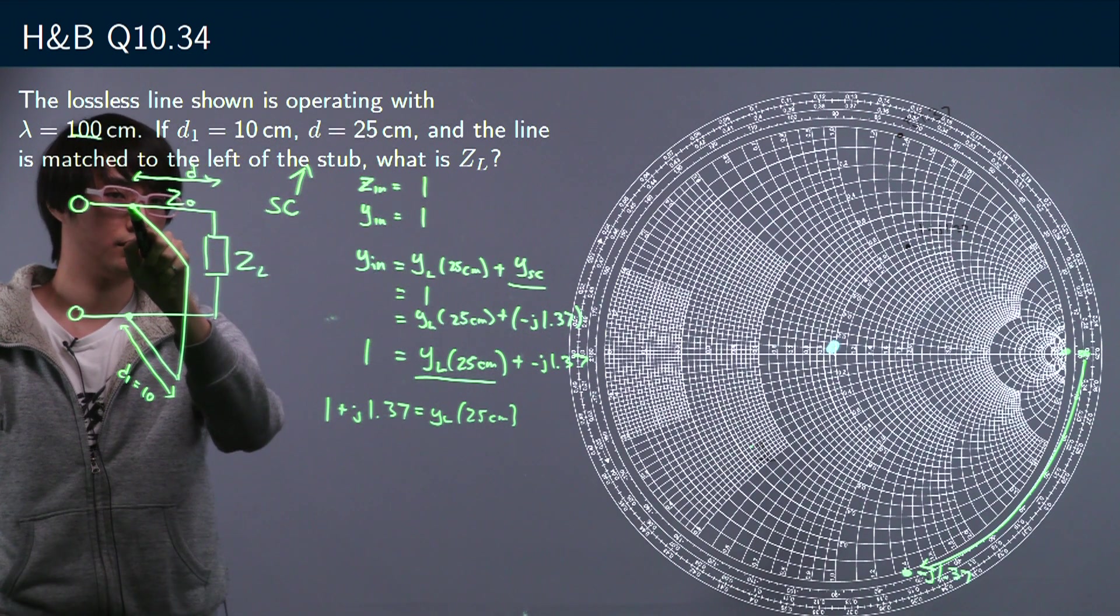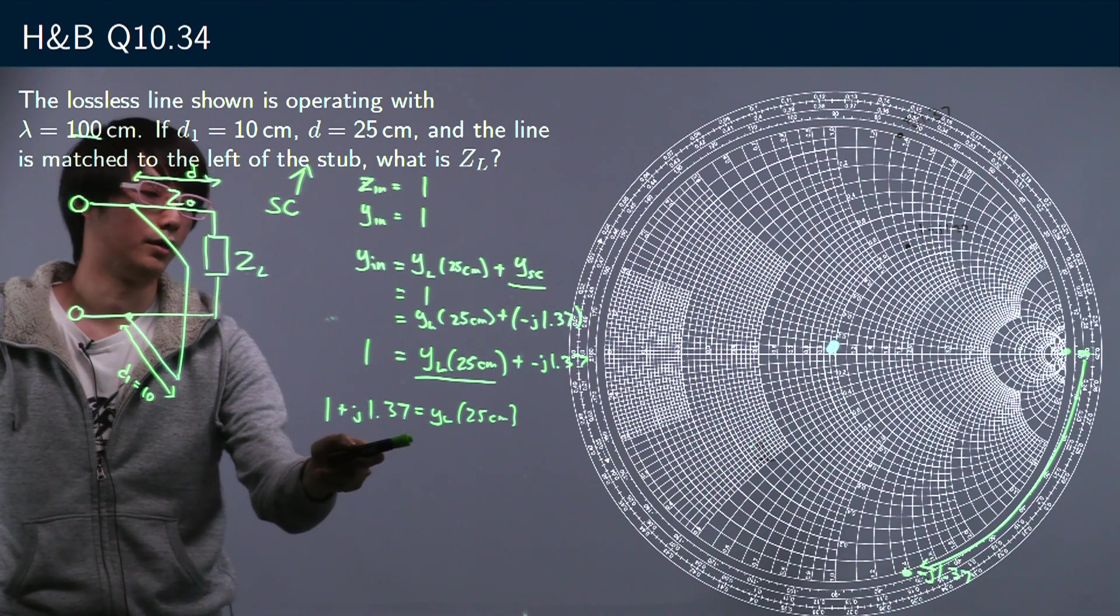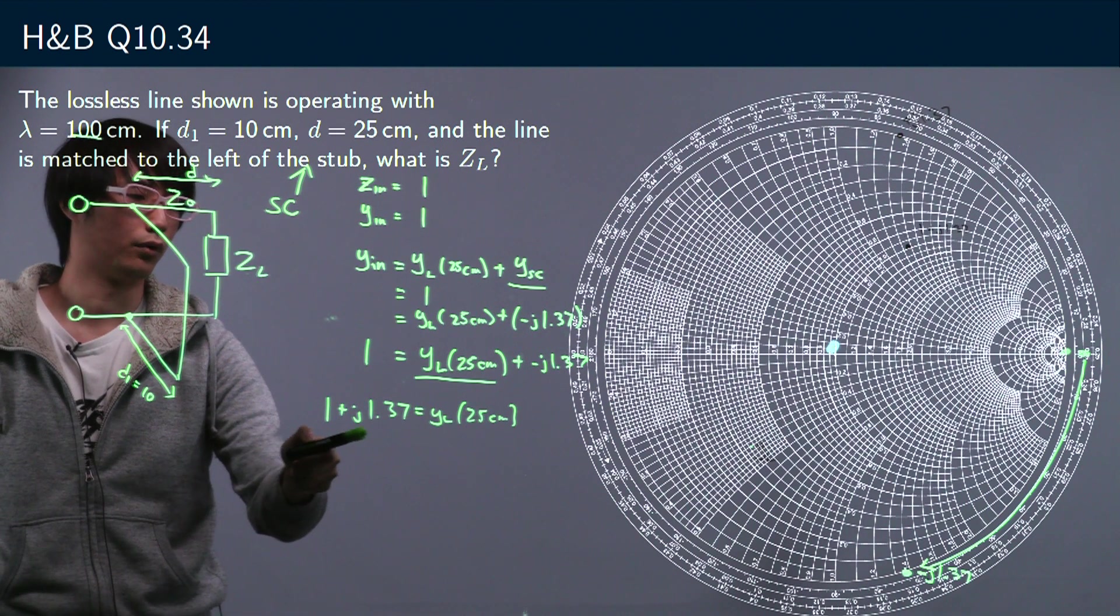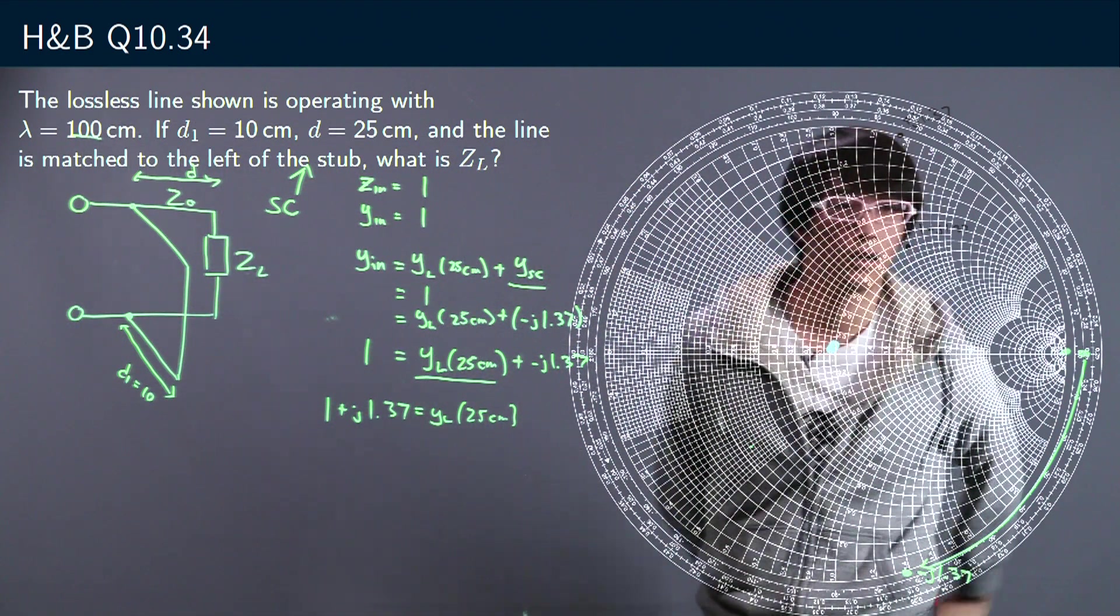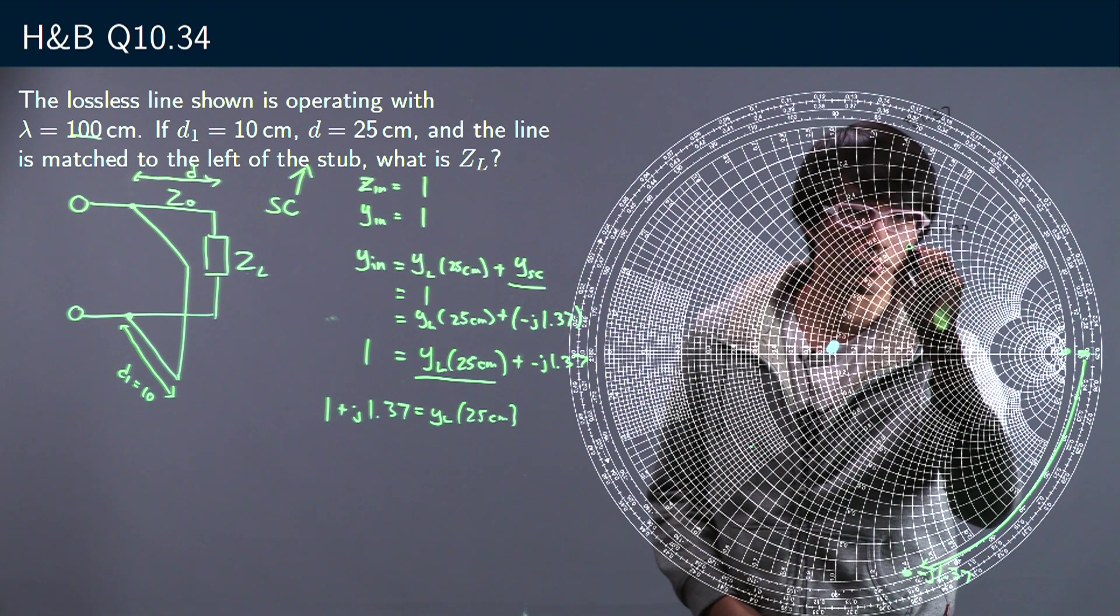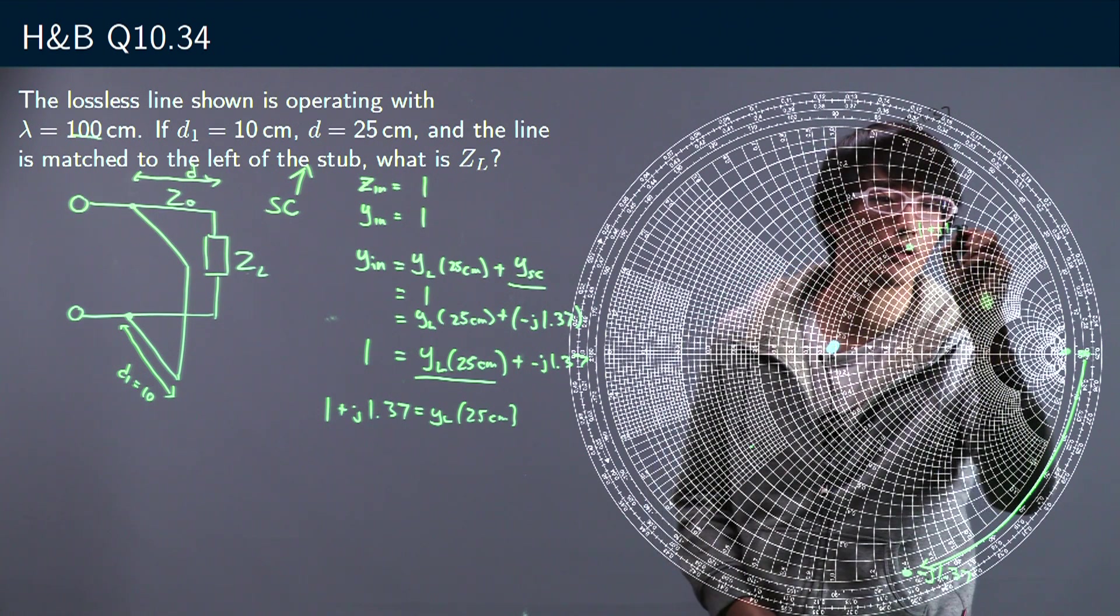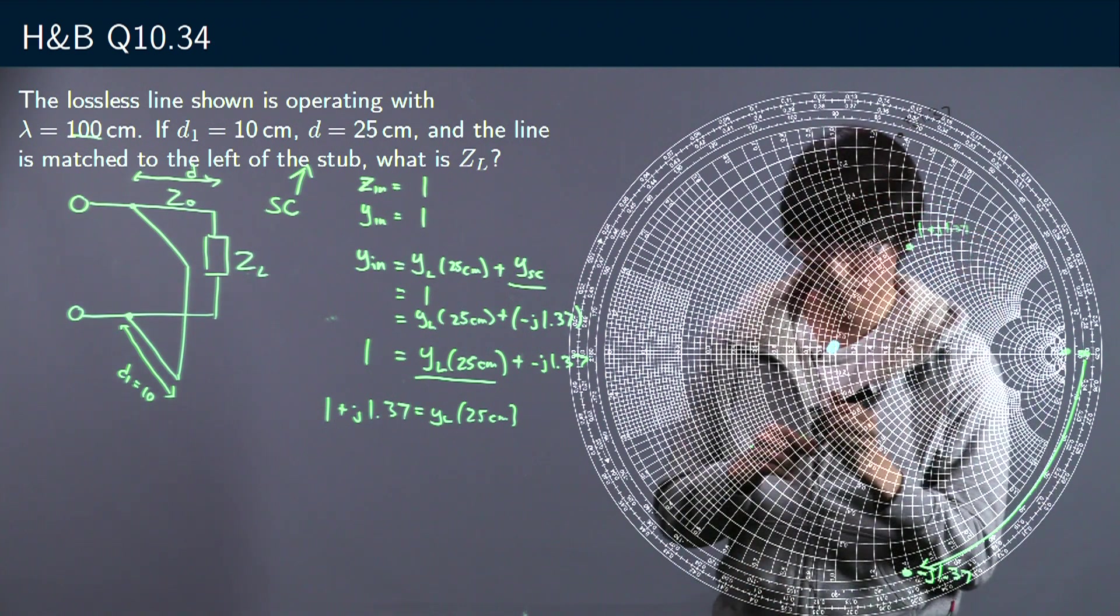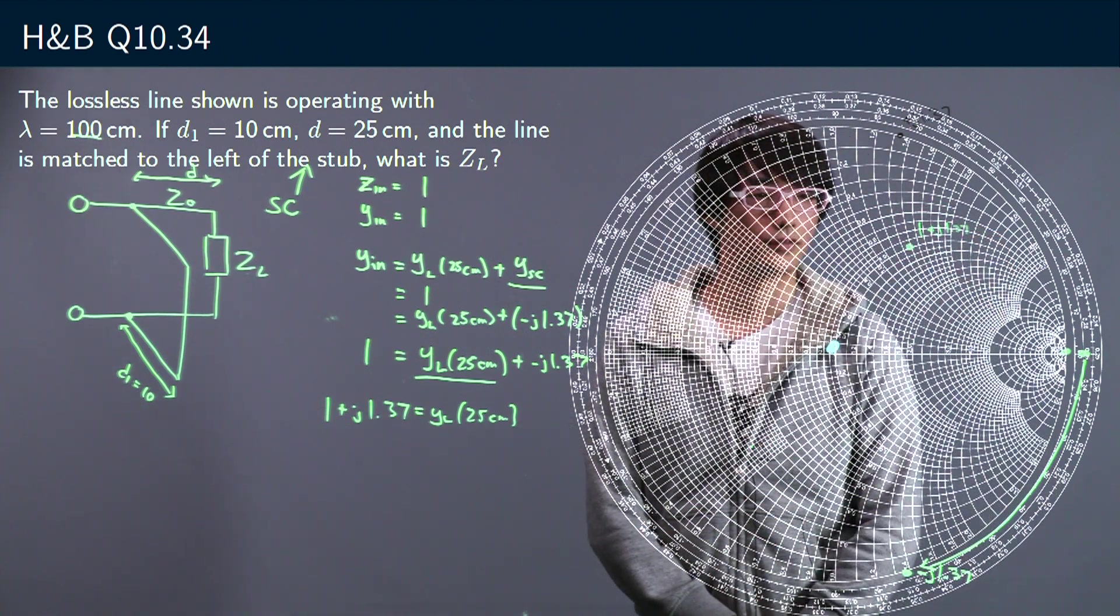At this distance we can see that this load here contributes an input admittance of 1.37j. So let's plot that on our Smith chart. That would be something here, plus j 1.37. So what's left to do?